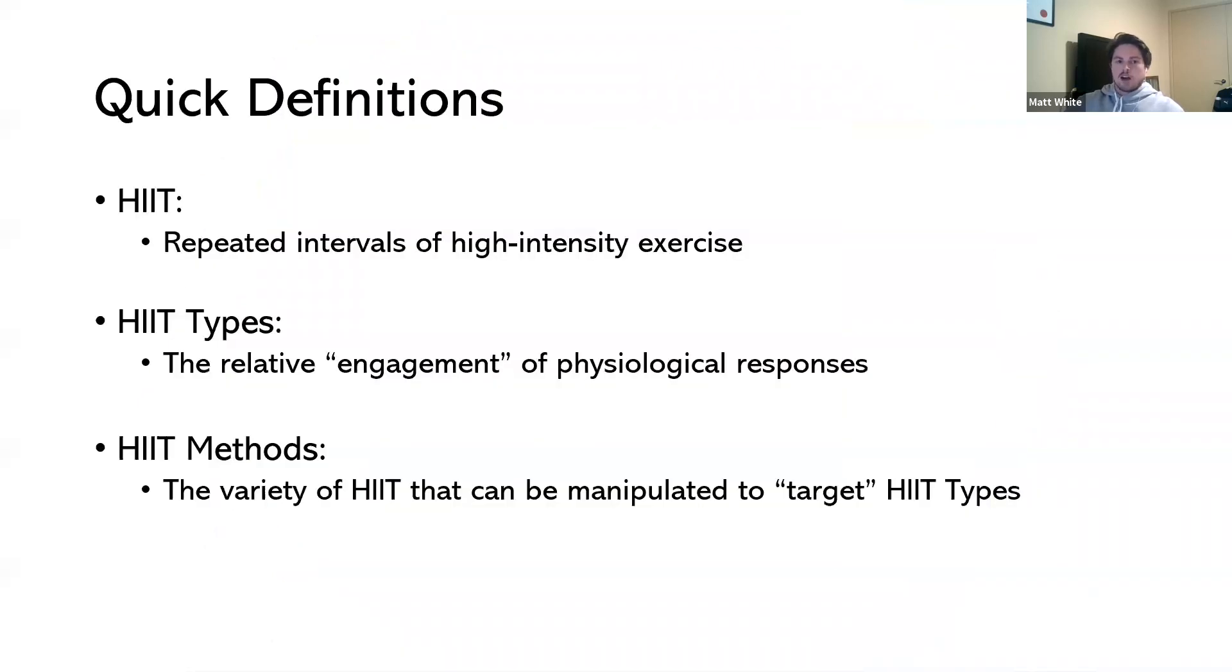So we've got a couple of definitions before we get into the depth of the talk. HIIT or high-intensity interval training refers to repeated intervals of high-intensity exercise, typically above the lactate threshold, interspersed with periods of low-intensity exercise or passive recovery. HIIT types refers to the relative engagement of either the cardiometabolic systems (aerobic and anaerobic) and/or neuromuscular systems. HIIT methods are different variations of HIIT sessions that can be manipulated to target the HIIT types.